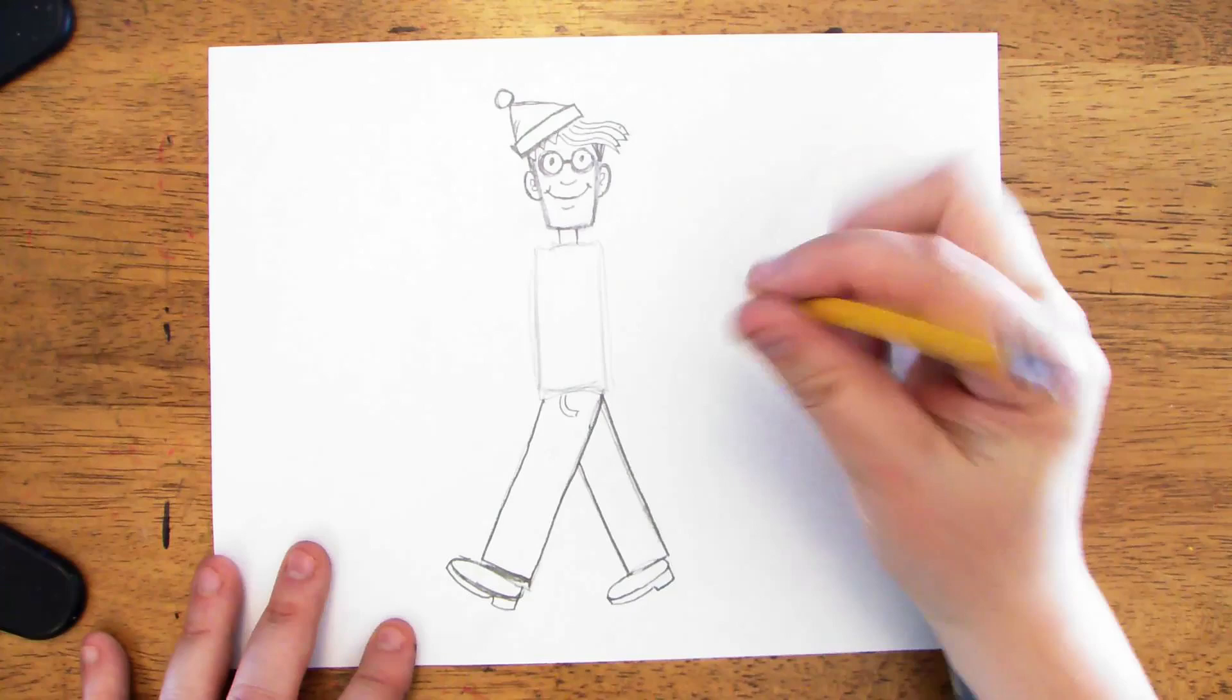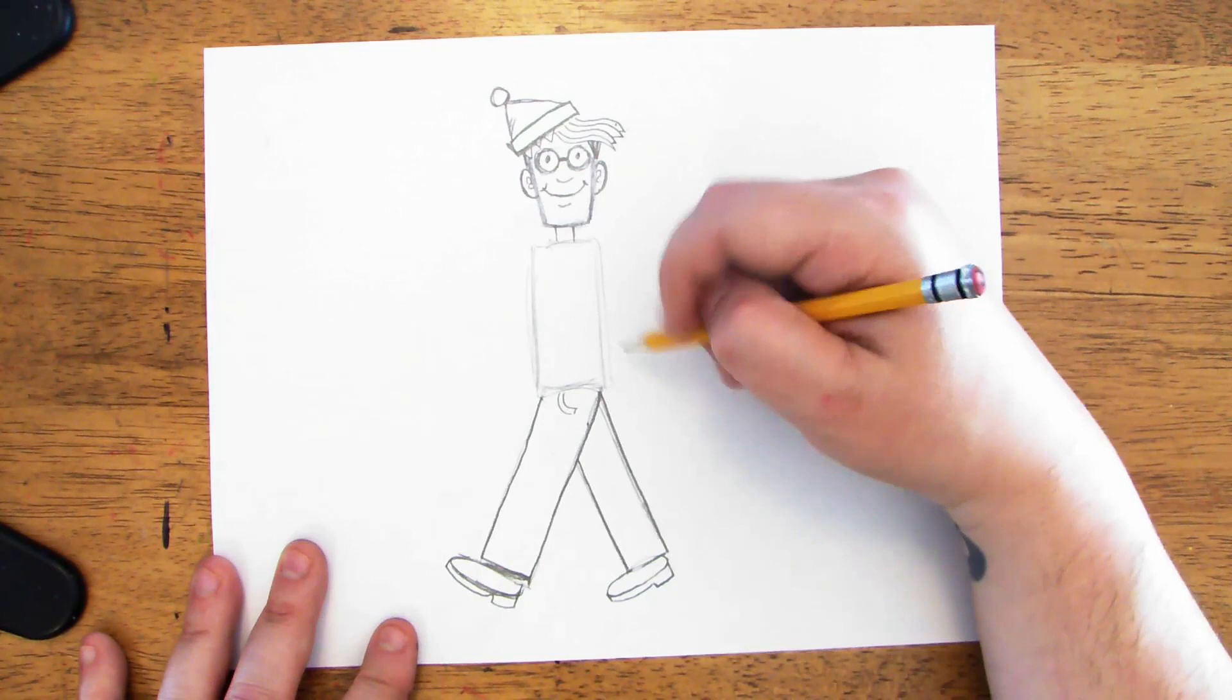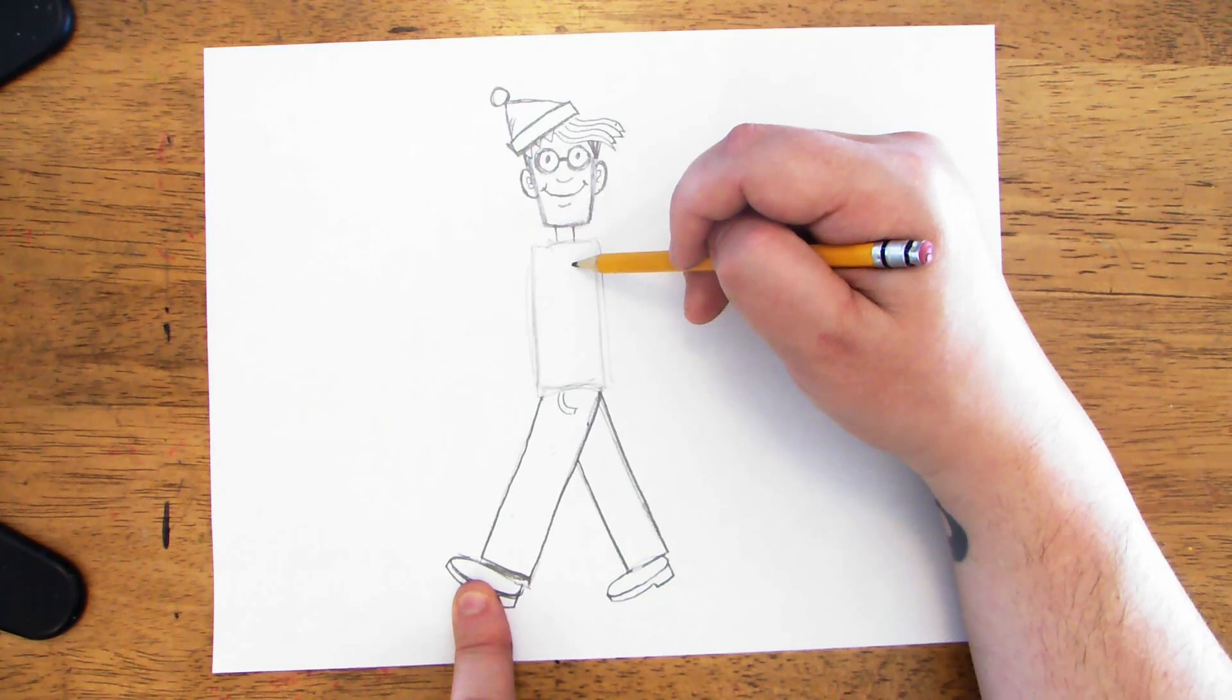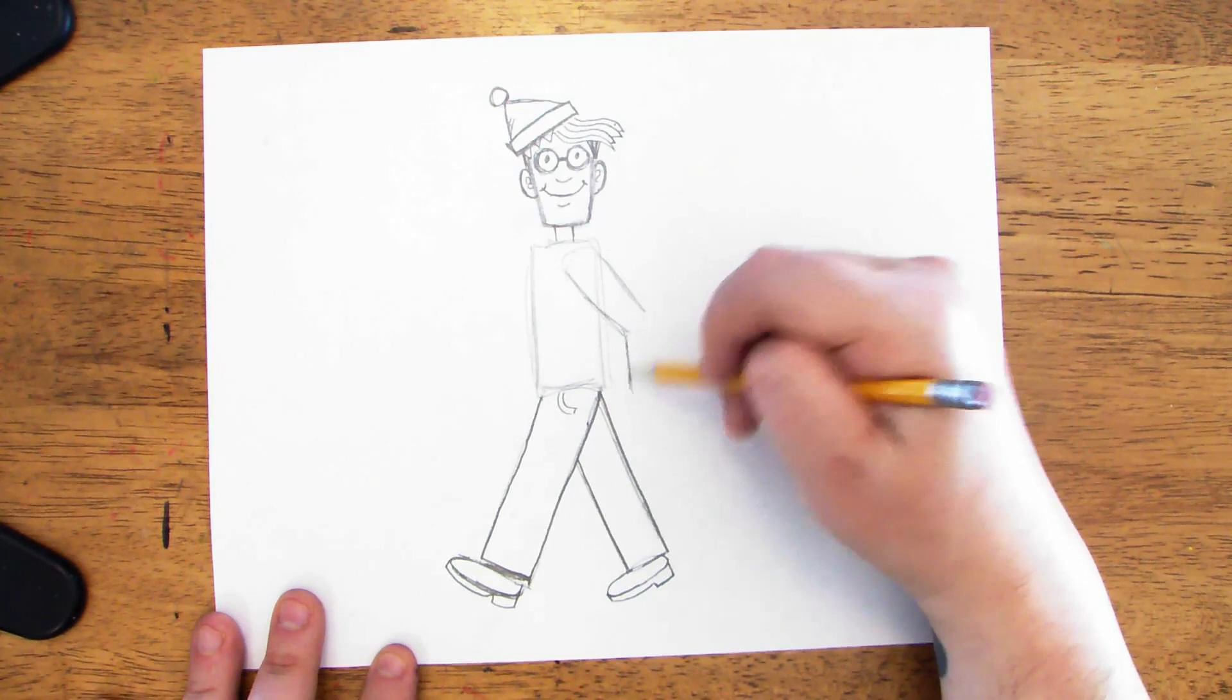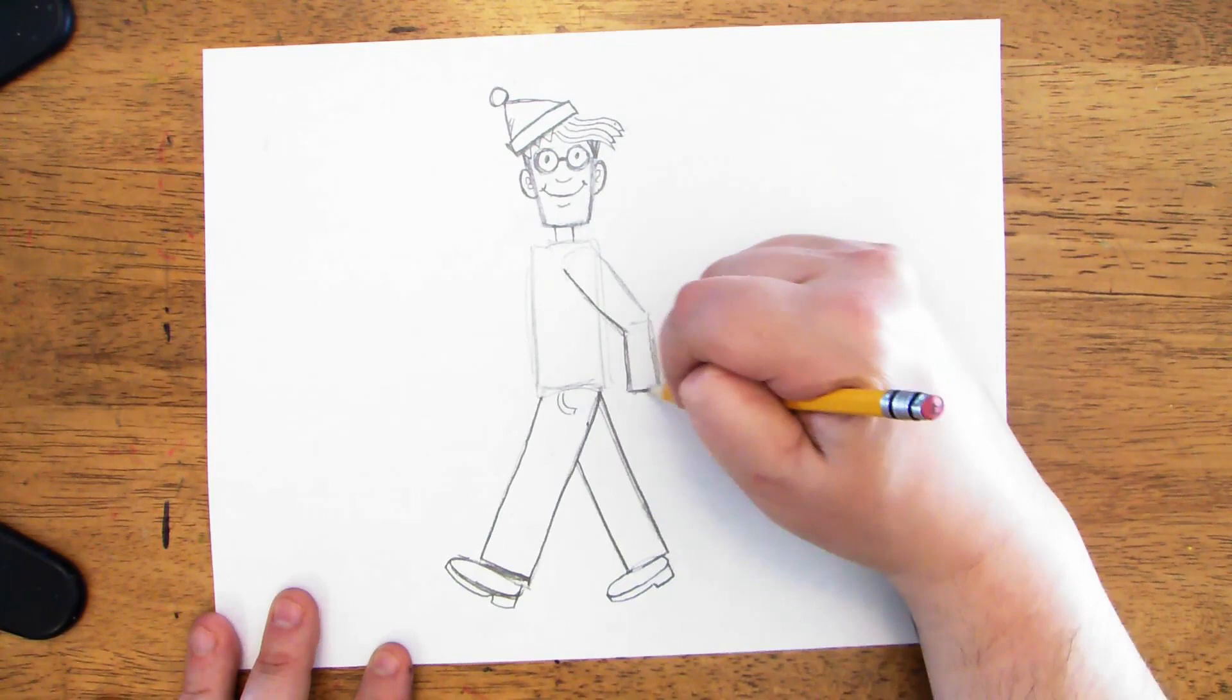And now I want to draw Waldo's upper body, his arms. Now I want one arm to be swinging backwards. If you've ever noticed when you're walking, whichever leg is going forward, the arm on that same side will go in the opposite direction. So this is his left leg. So his left arm is going to be two rectangle shapes. First coming back and then coming down. And then when I darken that in, I'm just going to darken the outline of it. And I'm going to give it a little curve up here where his shoulder is.